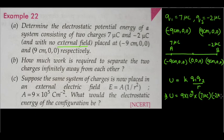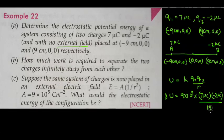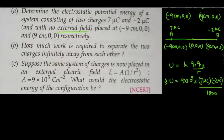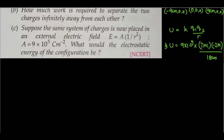Remember that when finding potential energy you must also include the sign of the charge. Here r is the distance between the two charges. The length AB is 18 centimeters, so we write 18 cm. In the next step we convert all quantities to SI units.